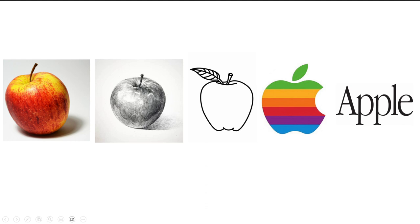We go from a realistic rendition of an apple on the left to the abstract idea of apple, and even further to an image laced with all kinds of other meaning — we think computers, technology, business. And finally to the word 'Apple' itself, which is interesting. Remember, it's an icon — it's a picture because it's a collection of icons. This word 'Apple' is simultaneously the most pure and the most abstract representation of an apple.